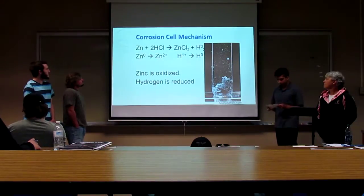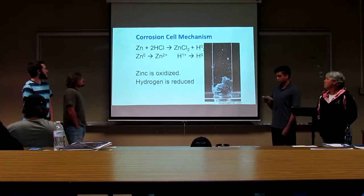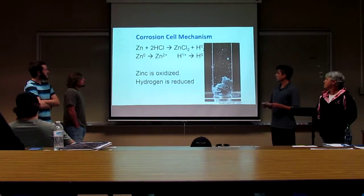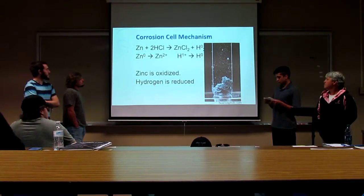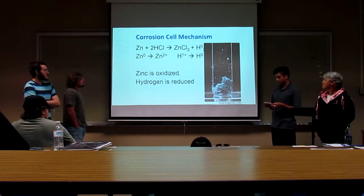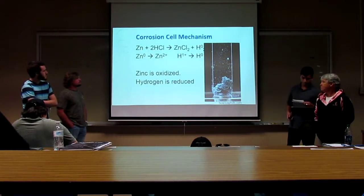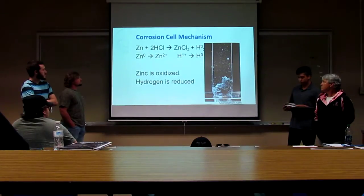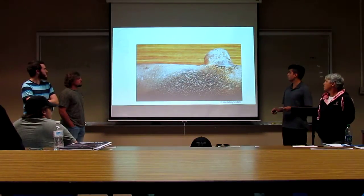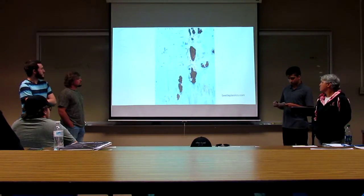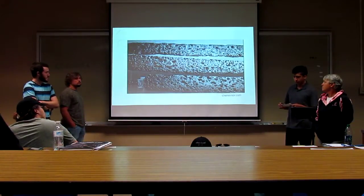This is the corrosion cell mechanism. The oxidation half-cell reaction is that the anodic metal is broken down by the acid and combines with the chloride ions to produce the solid metal salt. In the reduction half-cell reaction, the hydrogen atoms are deposited on the cathode and either combine with other hydrogen atoms to produce hydrogen gas or get absorbed into the metal. This is a picture of zinc inside hydrochloric acid. The acid is consumed during this reaction if there's enough material for the acid to react with. This is an example of hydrochloric acid damage on a steel pipe, on a storage tank, and on carbon steel.